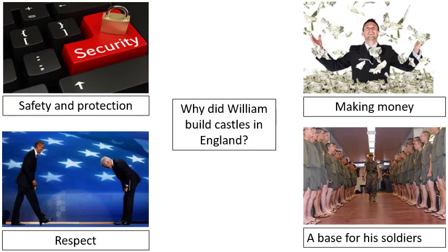When we think about our key reasons as to why William actually built castles, we can break it down into four. The first is safety and protection - he built castles to keep an eye on places to make sure they weren't going to rebel, but also for protection for his men and the people that lived there. So if anyone was going to invade England, the castle would also be helpful to protect people living nearby.